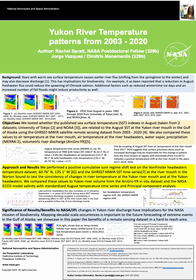Years with warm sea surface temperature cause earlier river flux, shifting from the springtime to the winter, and may also change river discharge. This has implications for biodiversity — for example, it's been reported that a reduction in August freshwater flux could reduce the spawning of Chinook salmon. Other factors may include reduced wintertime ice days and an increased number of fall floods that might also reduce fishery productivity.